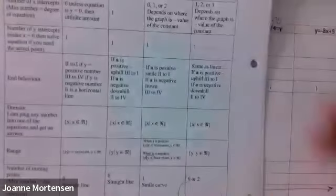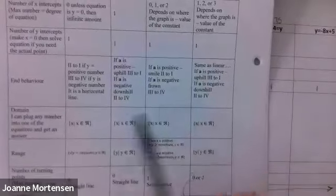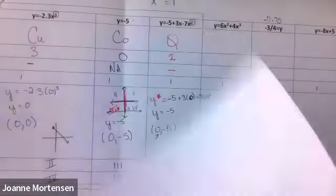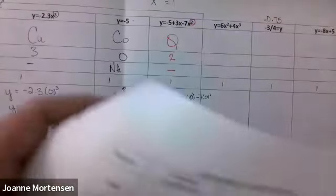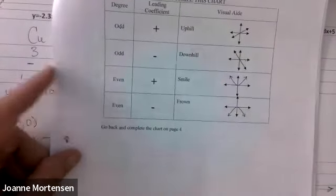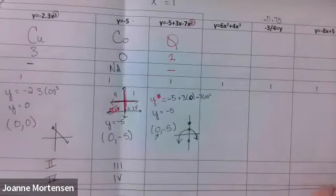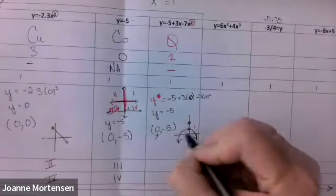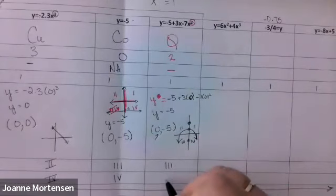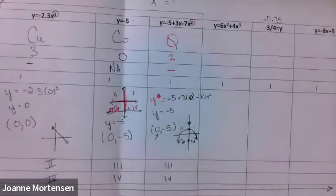You can read it from the chart: even degree, negative leading coefficient — it's a frown. So the quadrants are three and four. Done.